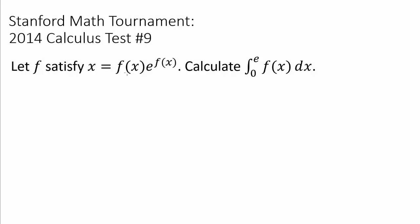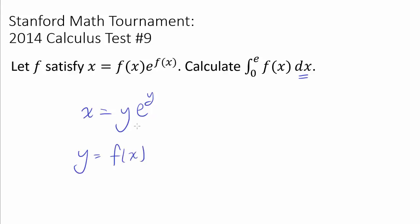So how do we even think about integrating this? Essentially, we have x equals y times e to the y, and we want to integrate this with respect to x from 0 to e. Obviously trying to find the inverse — trying to write y as some function of x — is going to be a pain. I don't even know where to start, and I don't think that's going to be any fun.